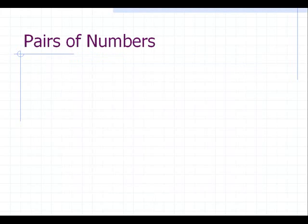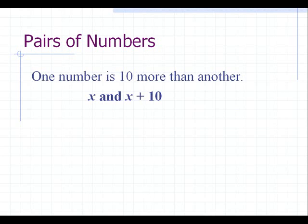Let's analyze 2 more verbal phrases indicating pairs of numbers. One number is 10 more than another. This implies, if one number is x, then other number could be x plus 10.